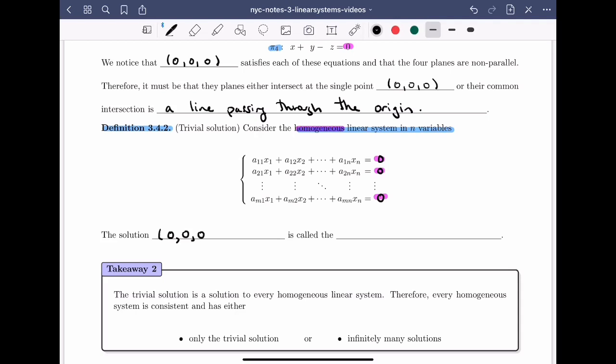So when you have this linear system of m equations, each in n variables, all of them with constant term zero, the solution (0, 0, 0, ..., 0)—so this is when x1 equals zero, x2 equals zero, x3 equals zero, all the way through xn equals zero, so that means here I have n zeros—so this solution is called the trivial solution. And that's because it sort of obviously satisfies each of those m equations.